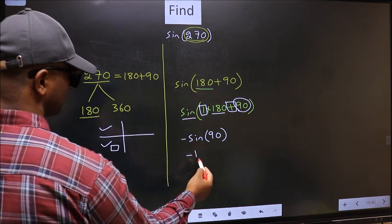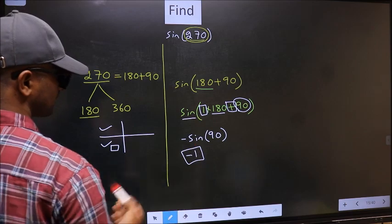So negative sine 90 is negative 1. This is our answer.